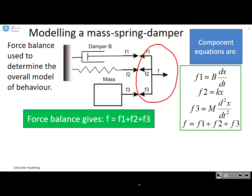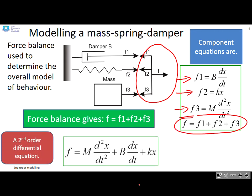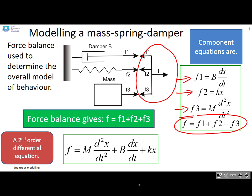So the component equations. We have the component equation for the damper, for the spring, and for the mass. And then we have the balance equations. And we simply put those four equations together and we end up with a second order differential equation model: F equals m d²x/dt² plus b dx/dt plus kx.